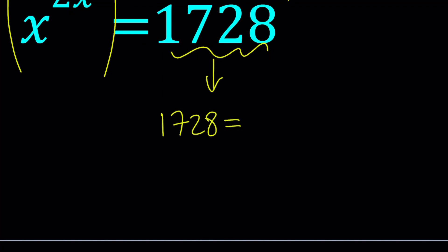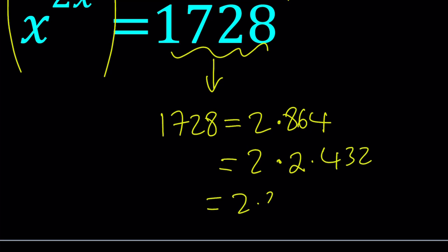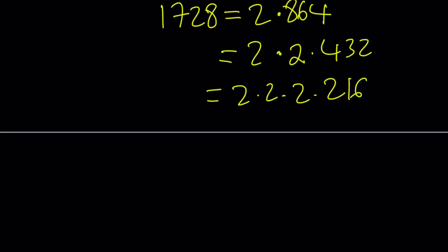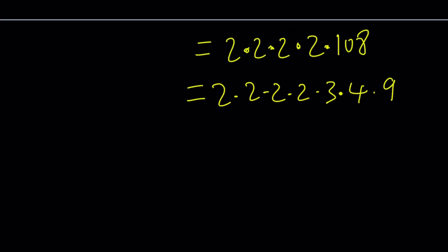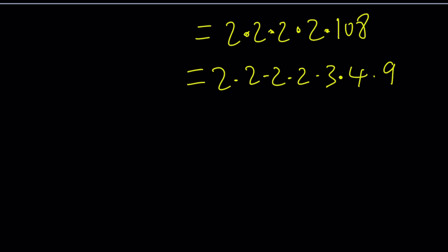1728 can be factored — let's divide by 2. Half of 1700 is 850, add 14 and you get 864. So 2 times 864, then 2 times 432, then 2 times 2 times 2 times 216, and again 2 times 2 times 2 times 2 times 108. Now 108 is 3 times 36, so we have 2, 2, 2, 2, 2 — five twos — times 3 times 36. But 36 is 4 times 9, and 4 and 9 are prime powers. So now we can write it out properly.